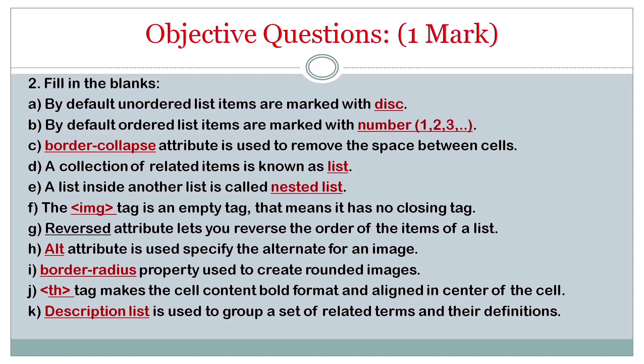ALT attribute is used to specify the alternate text for an image. Border-radius property is used to create rounded images. TH tag makes the cell content bold format aligned in center of the cell.